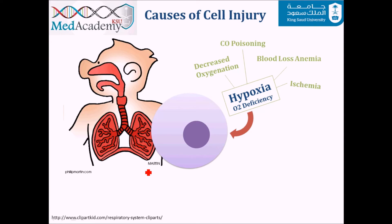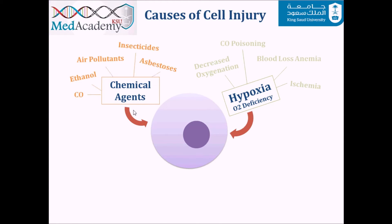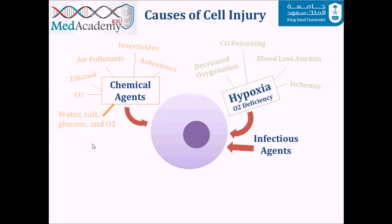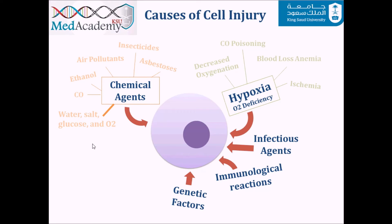The second cause of cell injury is chemical agents. They cause injury by altering membrane permeability, changing the integrity of enzymes or cofactors, and altering osmotic homeostasis. Even substances consumed daily — like water, salt, glucose, and oxygen — can be dangerous in excess. Other causes include infectious agents such as bacteria or viruses, and immunological reactions including autoimmune reactions where the immune system attacks its own cells, and allergic reactions that drive inflammation harming normal cells.